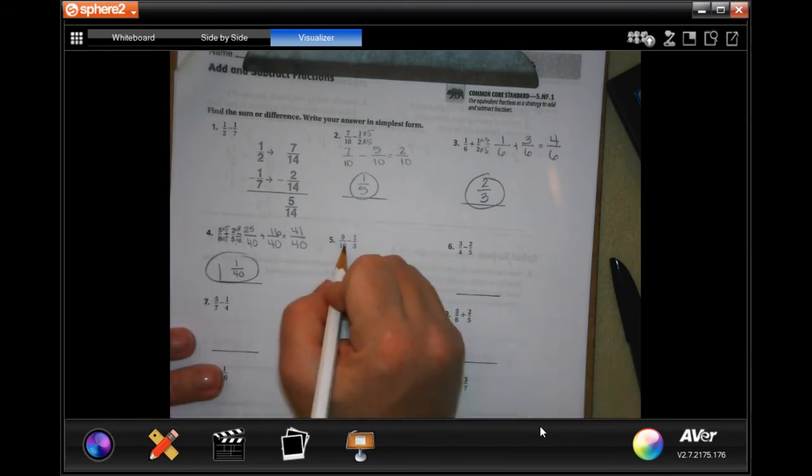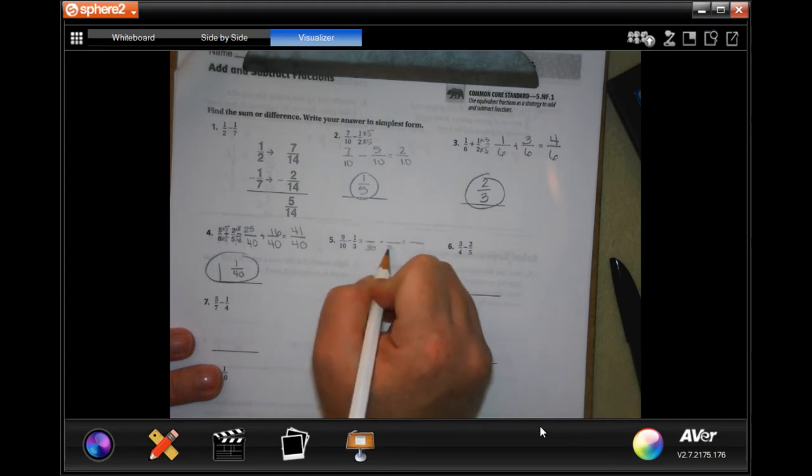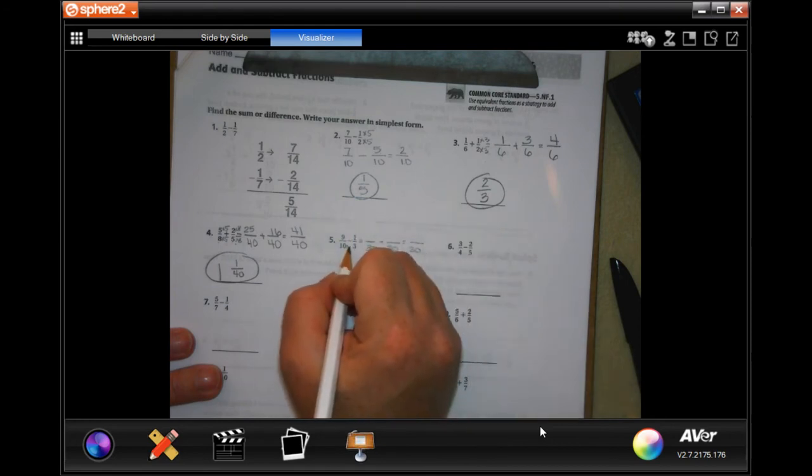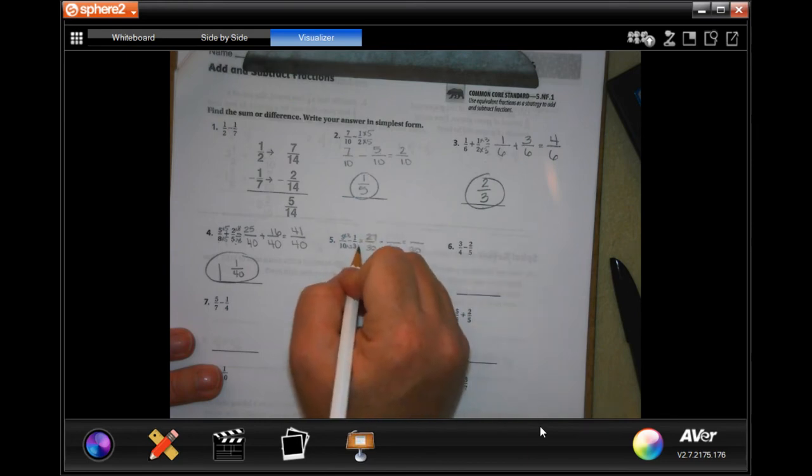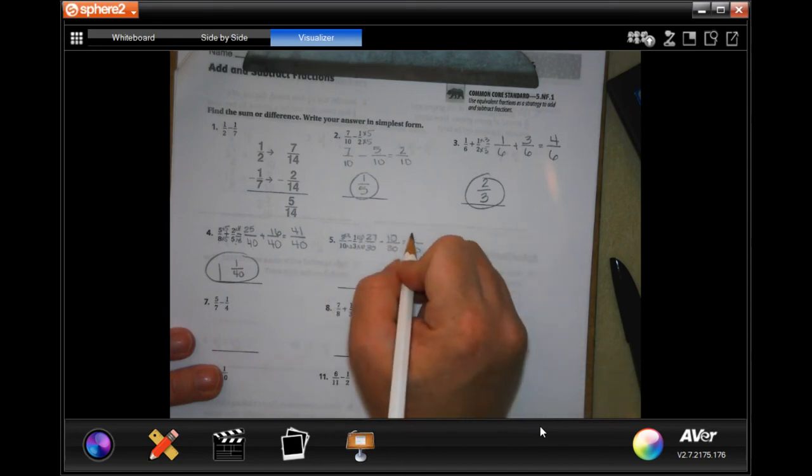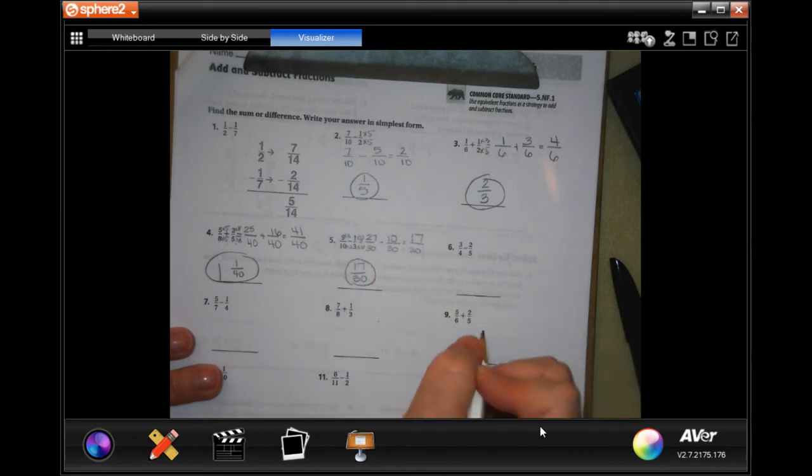Ten and three - smallest one is going to be thirty. I have to multiply ten by three, multiply the top by three, I get twenty-seven. I have to multiply the bottom by ten, multiply the top by ten, I get ten. Twenty-seven minus ten is seventeen. Seventeen over thirty. Seventeen is prime so I can't reduce that any.